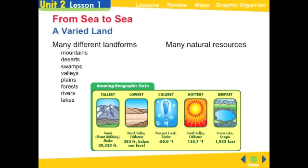Natural resources include farmland, which we use to create food; forests, which we use to get building materials like lumber; and coal and oil. Another natural resource to talk about is minerals. Minerals are things we find in nature that are generally mined — things like coal, iron, copper, gold, and silver. They are resources that we can dig up from the earth in order to use them.